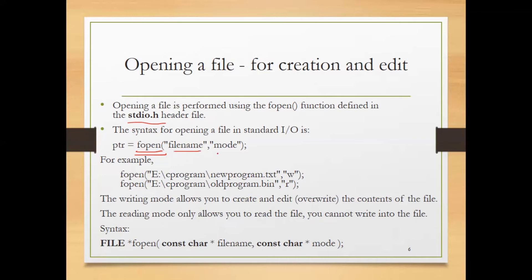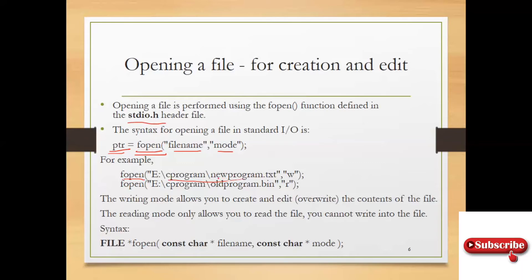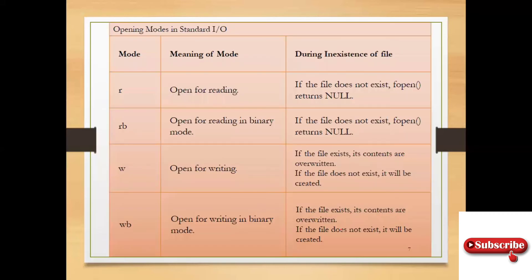You can use the first parameter of fopen to specify the file name, followed by the second parameter for the open mode. When you use the fopen function, you can select read, write, or append mode. The result is returned to the file pointer, so you declare: ptr = fopen(filename, mode).